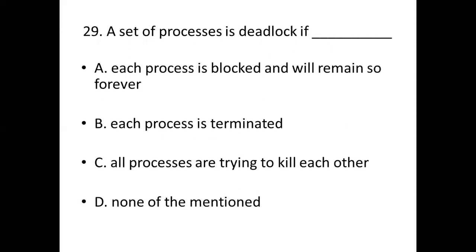Twenty-ninth bit: A set of processes is deadlocked if dash. Option A: Each process is blocked and will remain so forever. Option B: Each process is terminated. Option C: All processes are trying to kill each other. Option D: None of them mentioned. Answer: Option A, each process is blocked and will remain so forever.